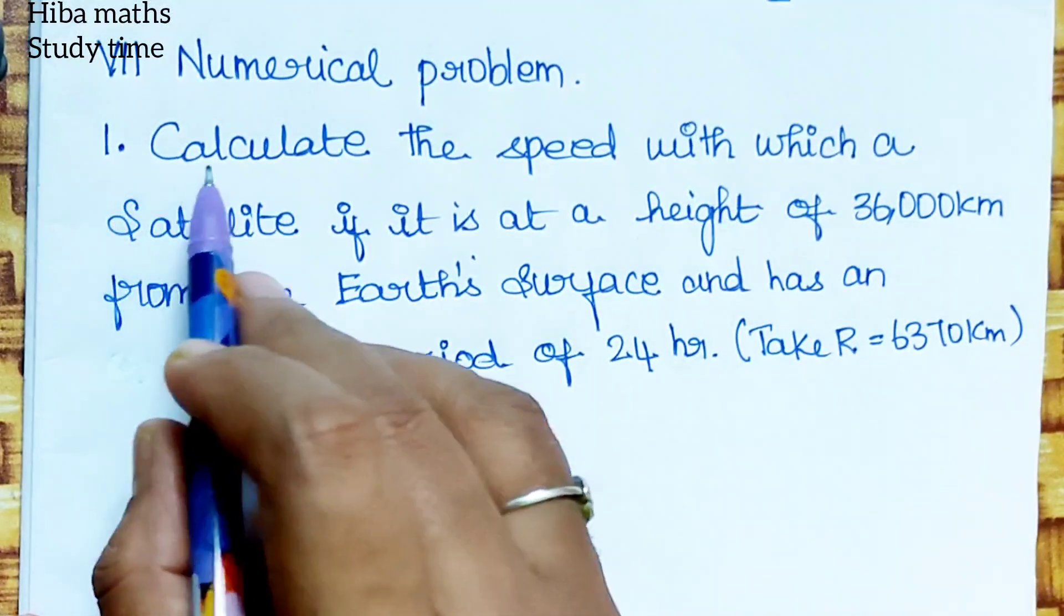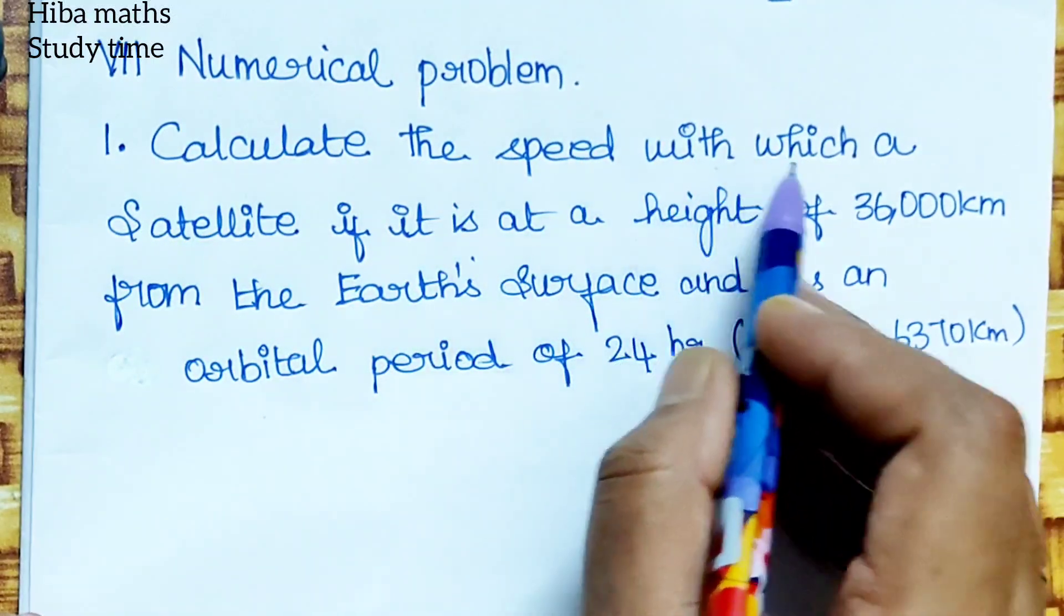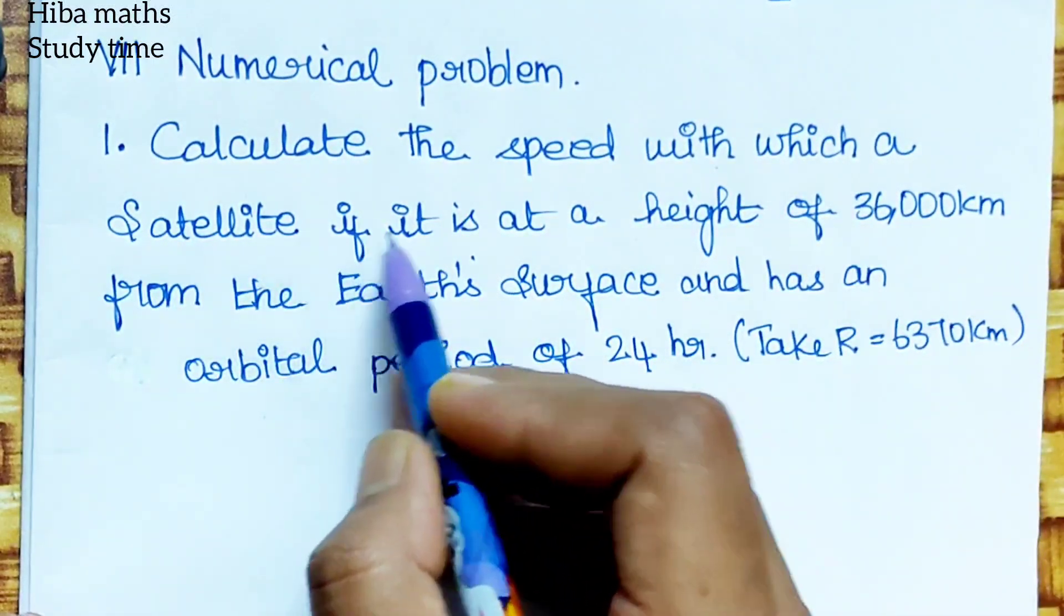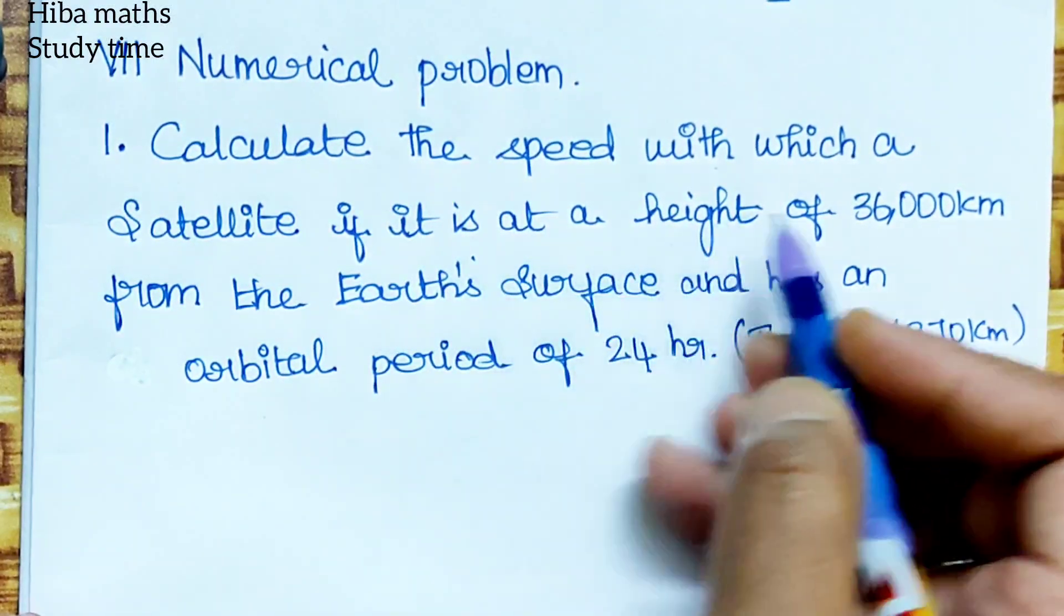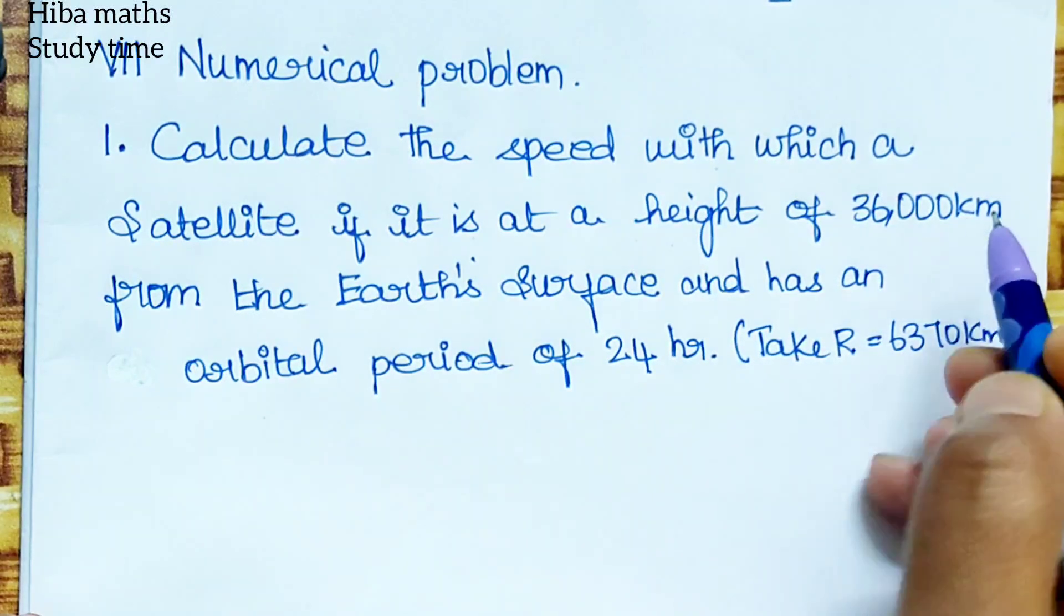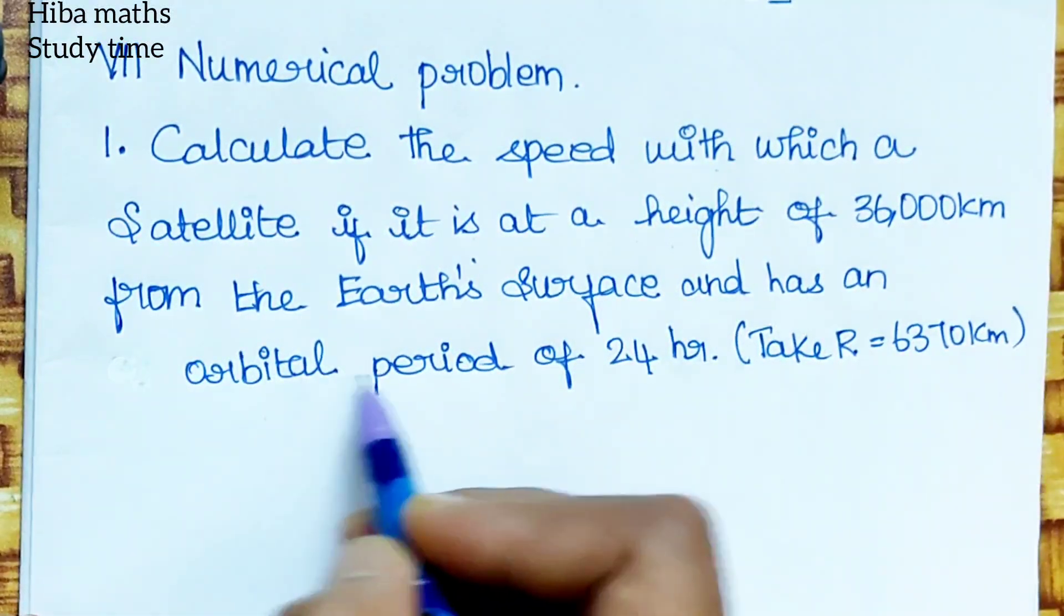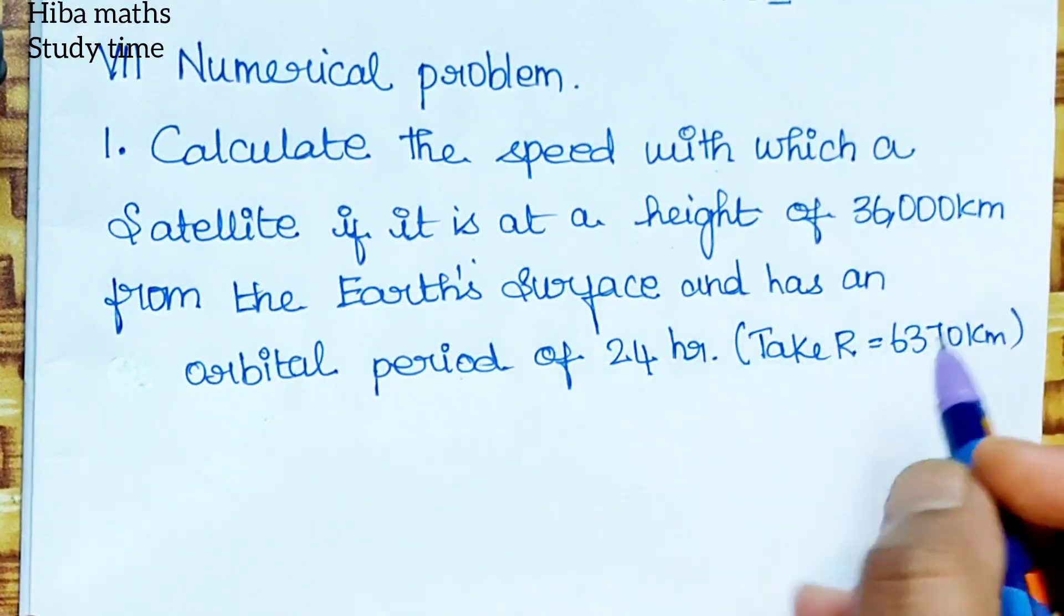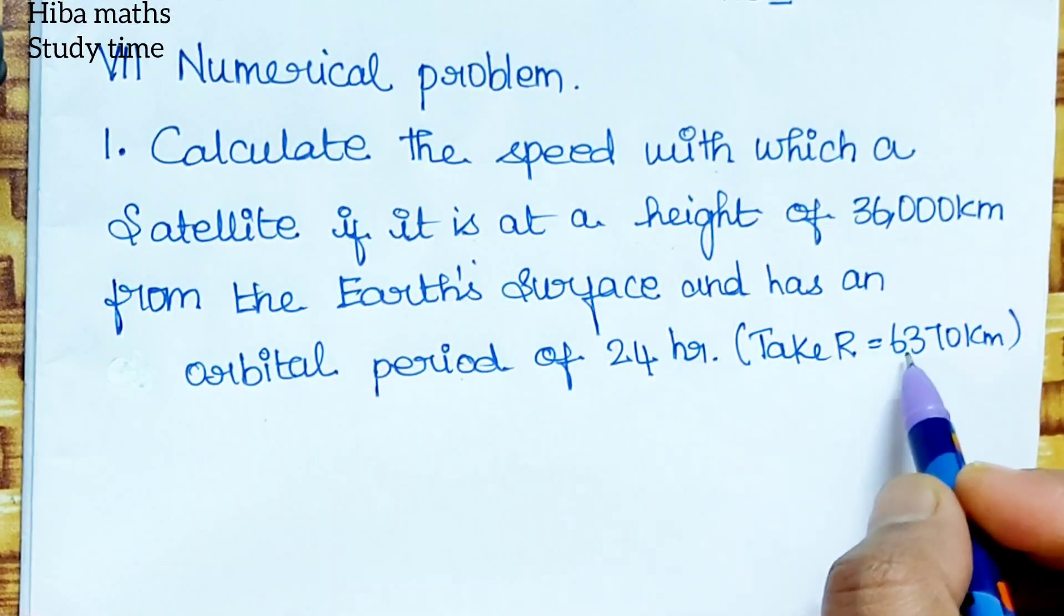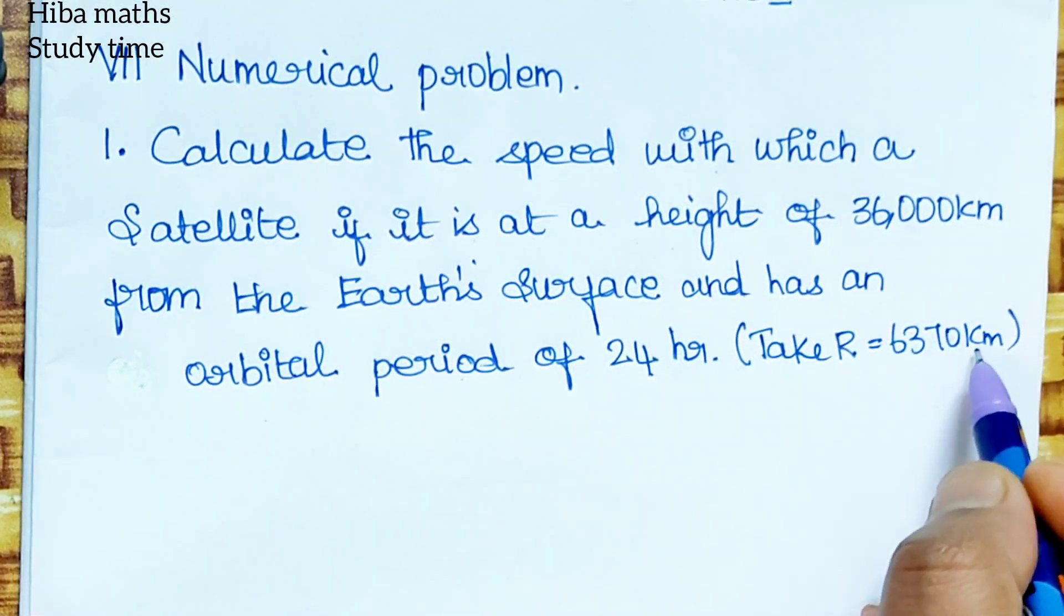First question: Calculate the speed with which a satellite, if it is at a height of 36,000 km from the Earth's surface and has an orbital period of 24 hours. Take R is equal to 6,370 km.